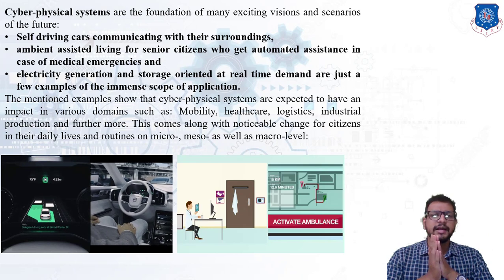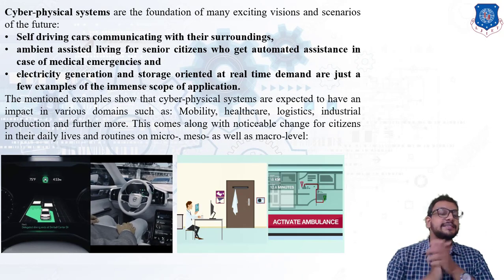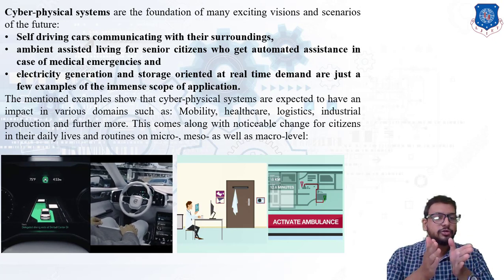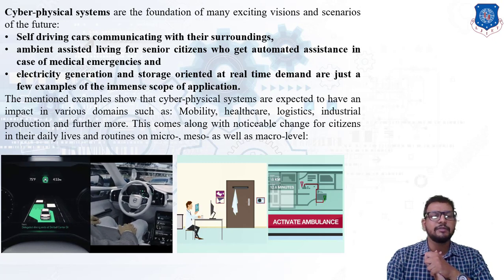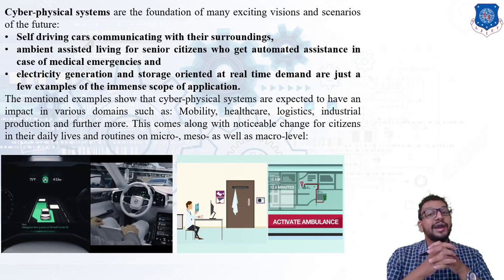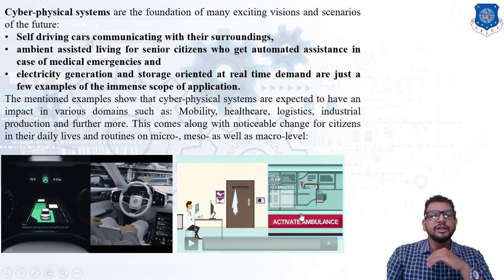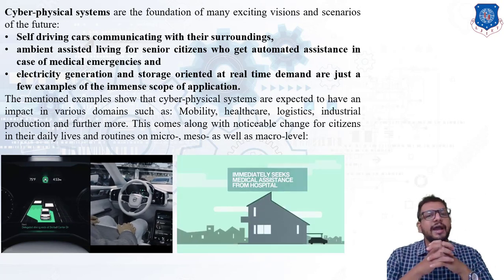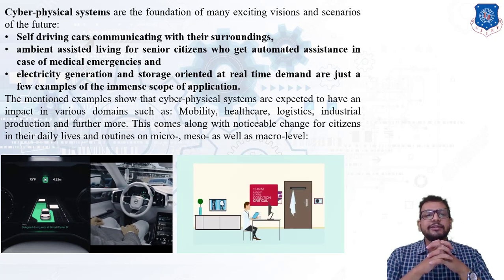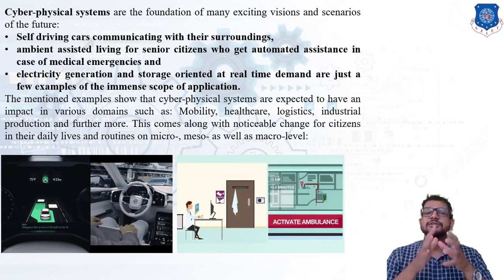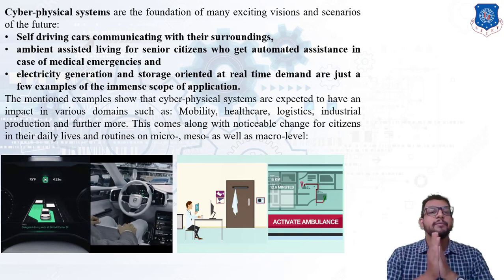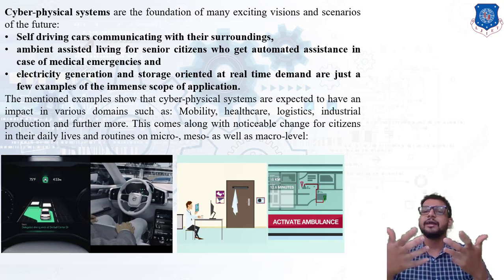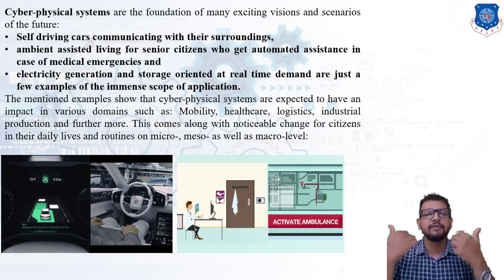Regarding cyber physical systems, there are various exciting visions and scenarios for the future. For example, self-driving cars communicating with their surroundings — as shown in the animation, a driver is not required to operate the car as it operates itself using sensors and IoT. Next is ambient assisted living for citizens who get automated assistance in case of a medical emergency. Also, electricity generation and storage oriented at real-time demand are just a few examples of the immense scope of application. CPS are expected to have impact in various domains: mobility, healthcare, logistics as smart storage, and industrial production.